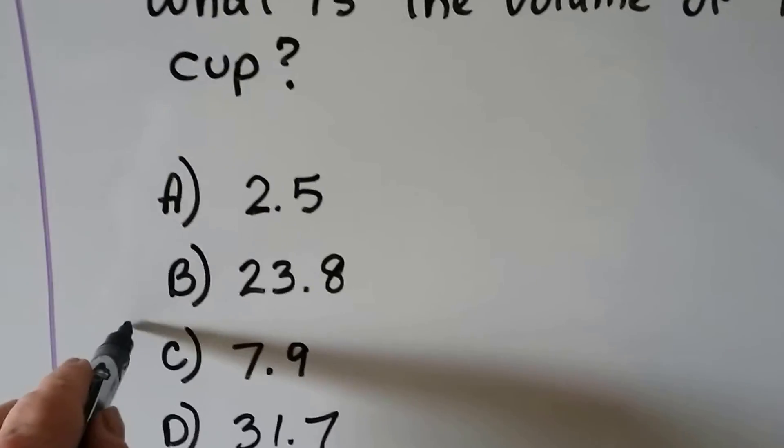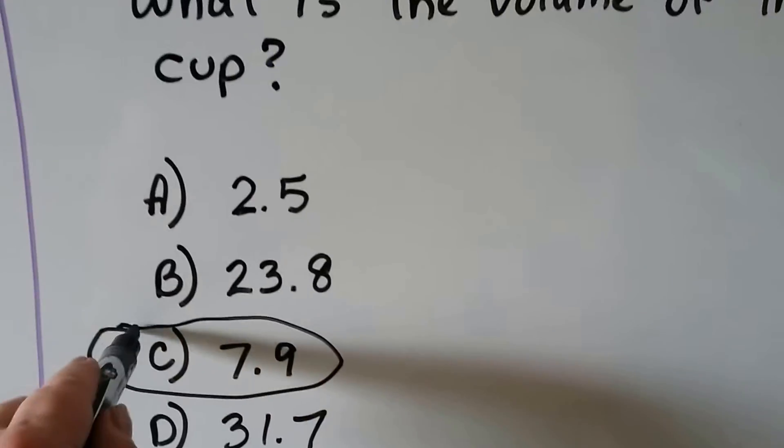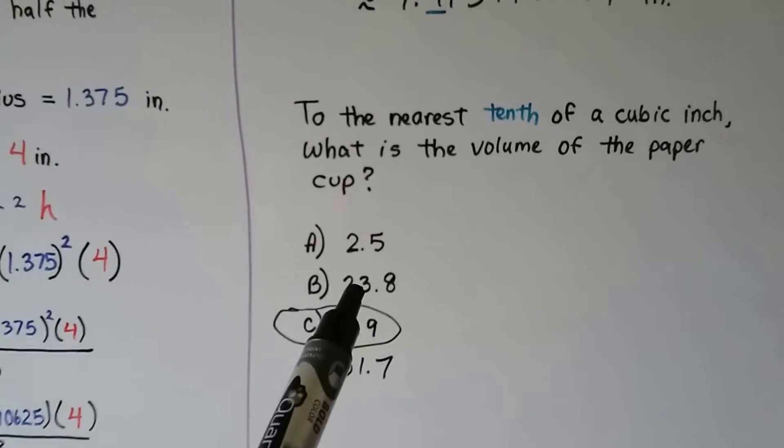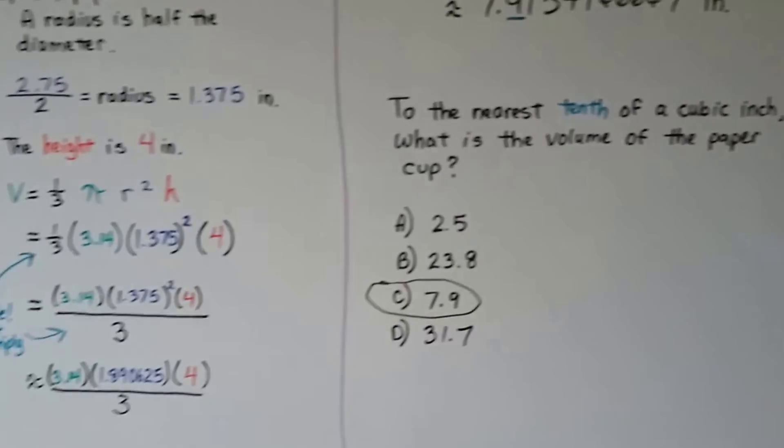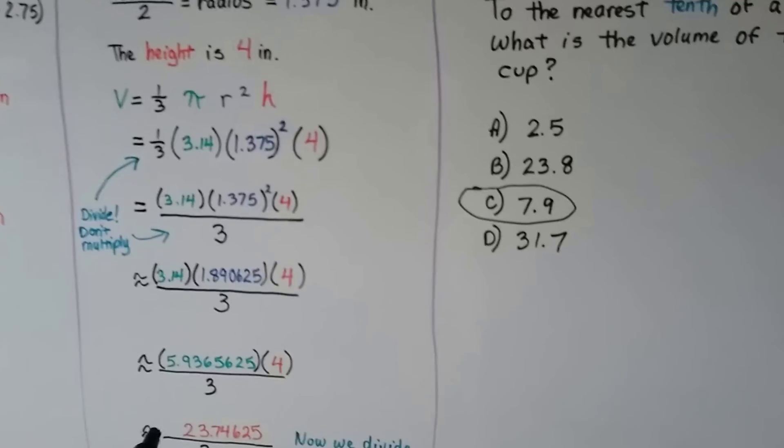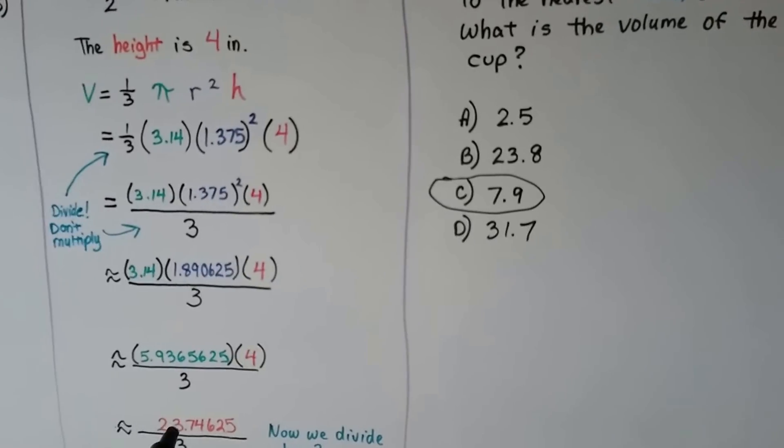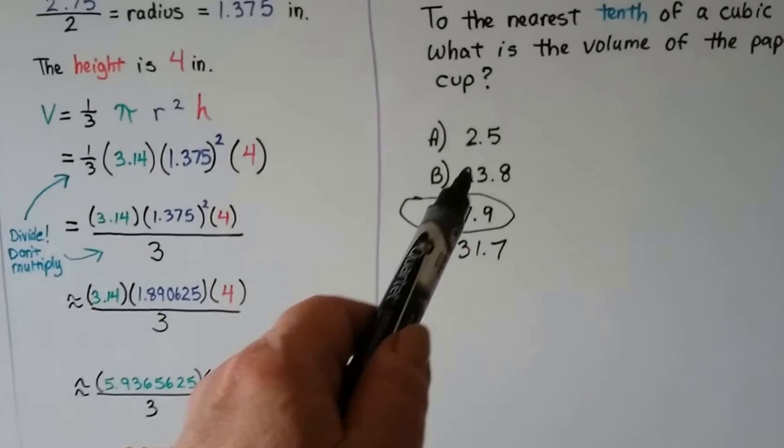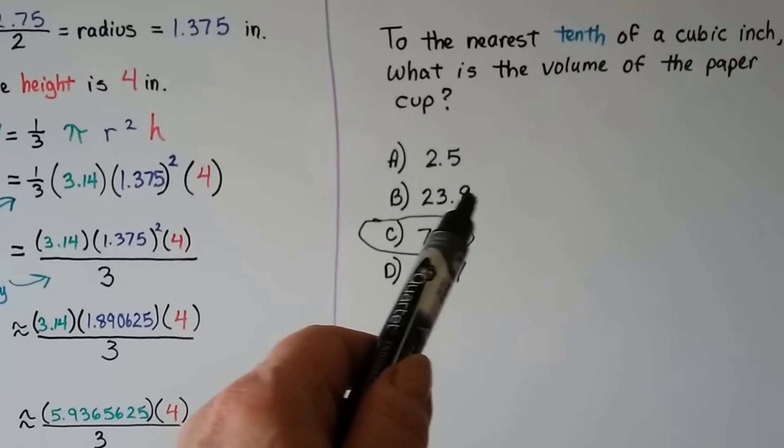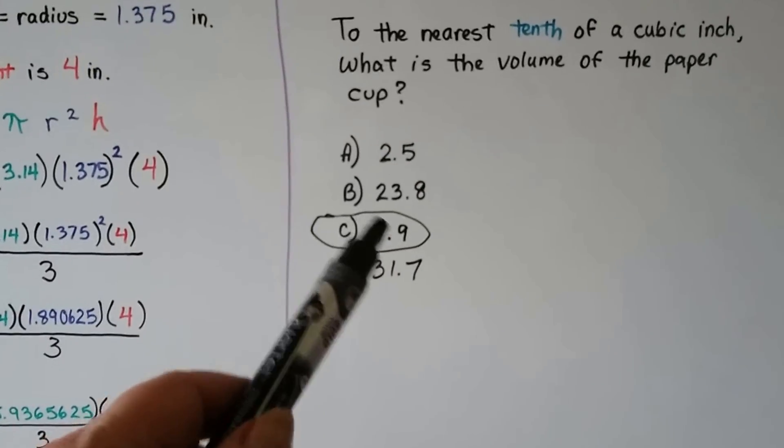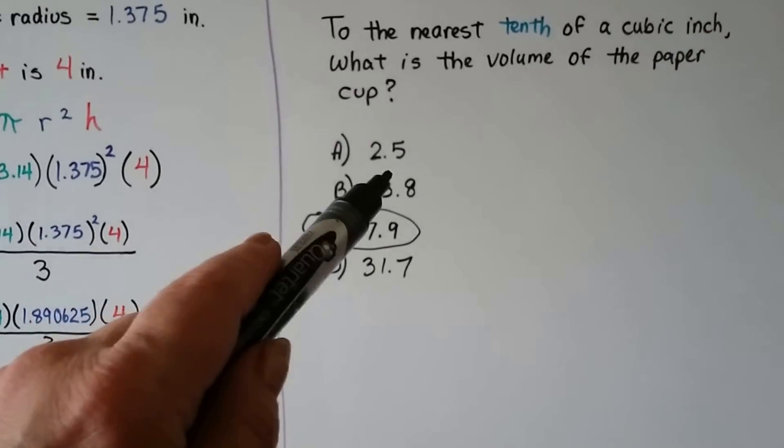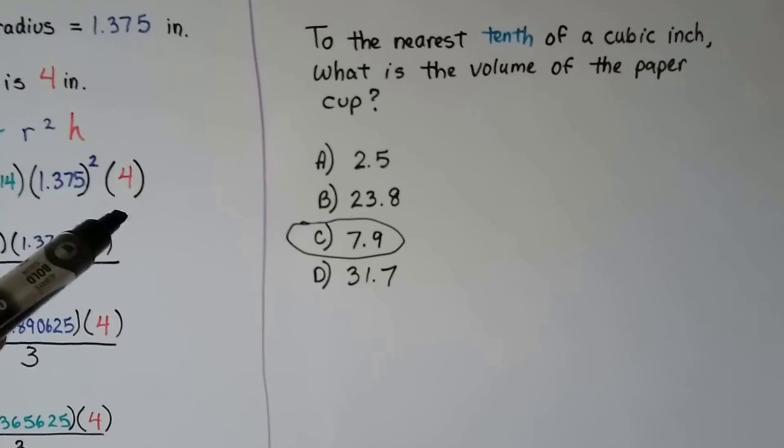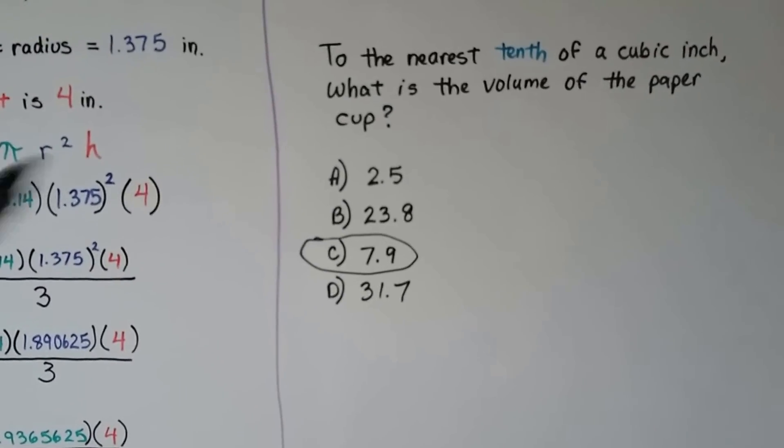And if you look at the answers they give you, they'll try to throw in answers that could fool you. When we got to the point where it was 23.74, they might have a 23.8 or a 23.7 to trick you so that you'll do half the problem, see that answer and say, oh, it's that one, and not finish the problem.